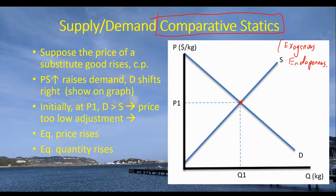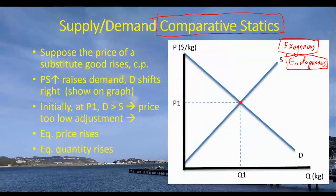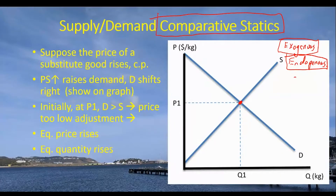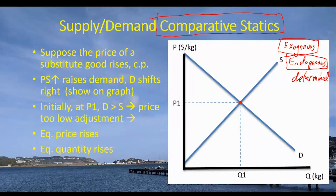We can change exogenous variable values — we can raise or lower the price of substitutes — and ask how that change affects the marketplace. When we do that, we're asking how a change in exogenous variables affects the endogenous variables in the model. The endogenous variables are the ones determined as outcomes of the model — they are the implications of the model.